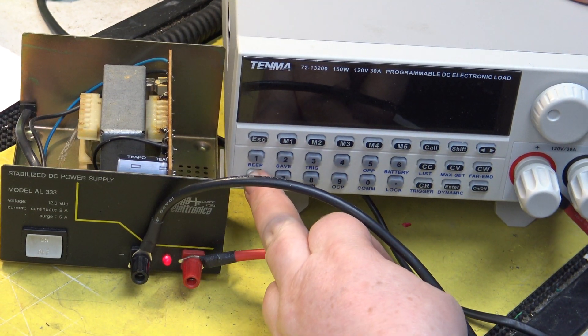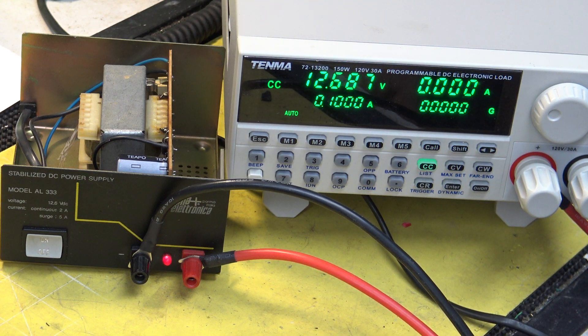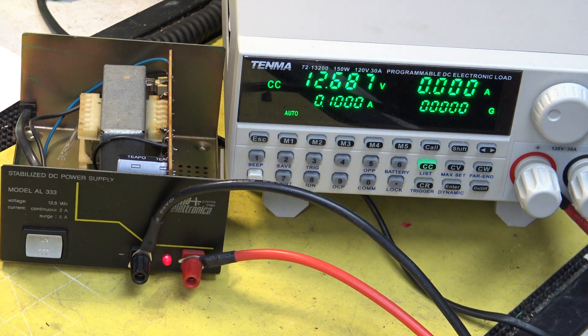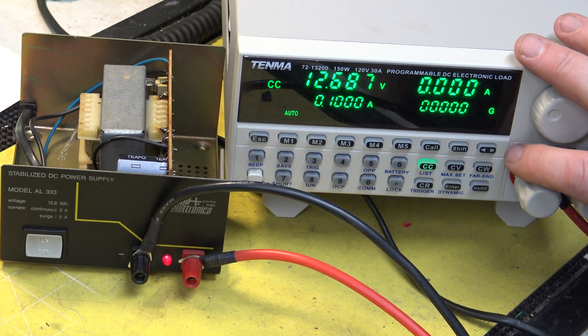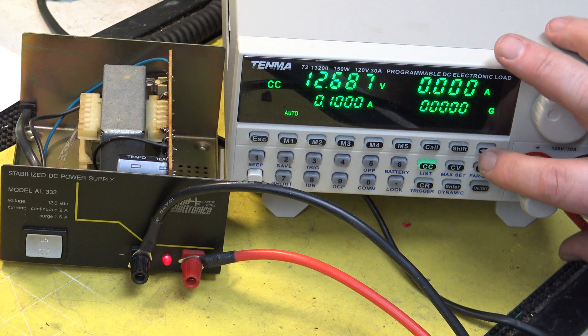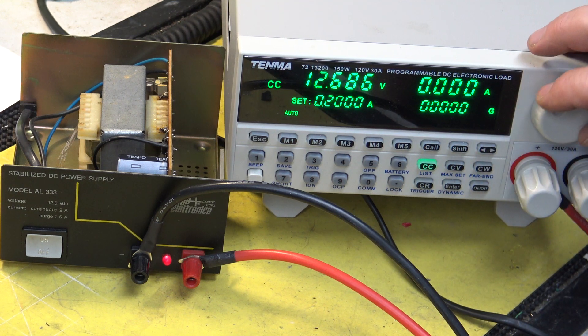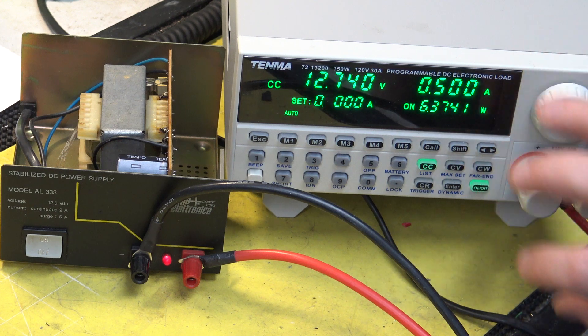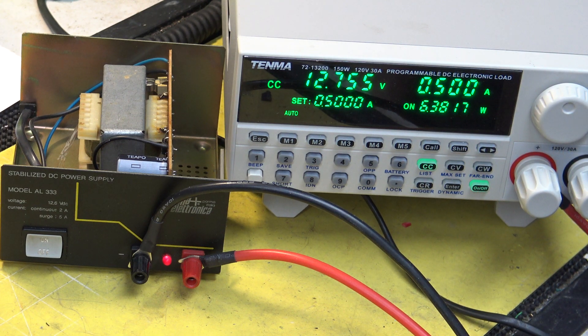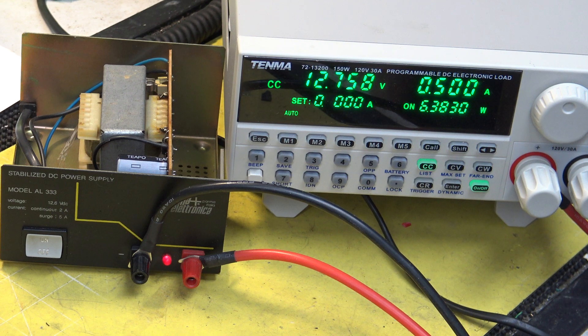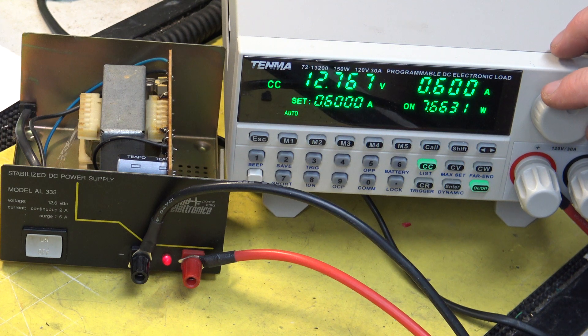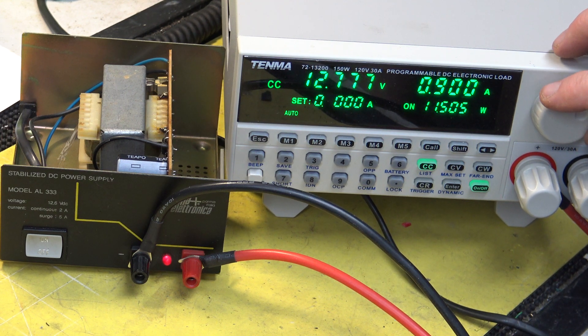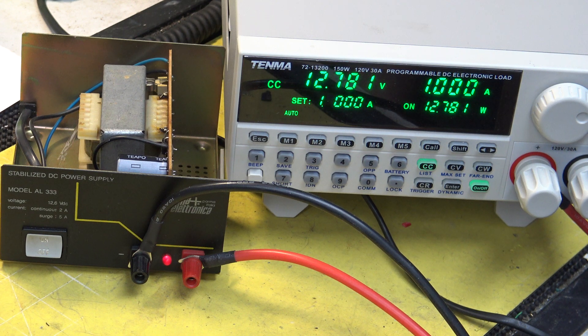That's the electronic load connected up and it says it's 12.687 volts. Let's put 500 milliamps on it for a start. At half an amp it's 12.7 volts, so it's actually gone up. I'm going to do this live. We're now at one amp—it's 12.7 volts.